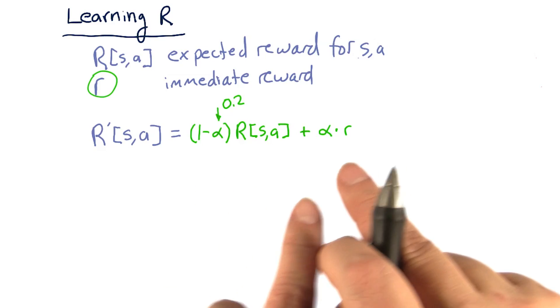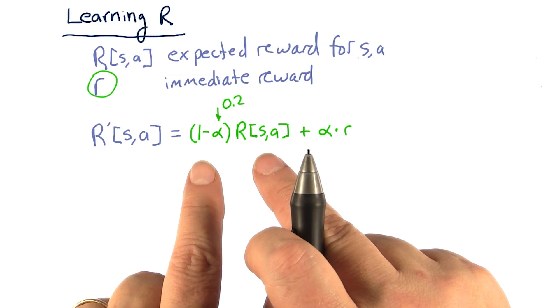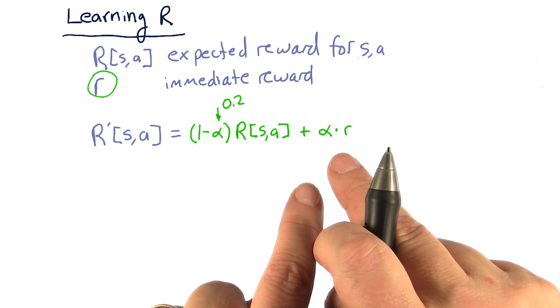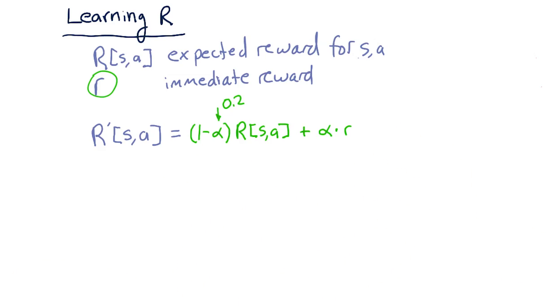So we're weighting, presumably, our old value more than our new value, so we converge more slowly. But that's it. That's a simple way to build a model of R from observations of interactions with the real world.